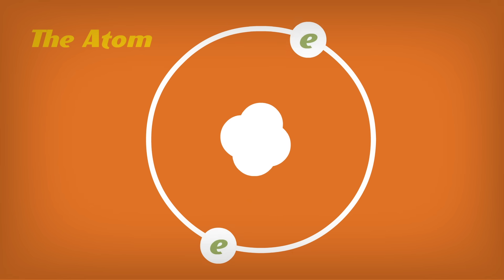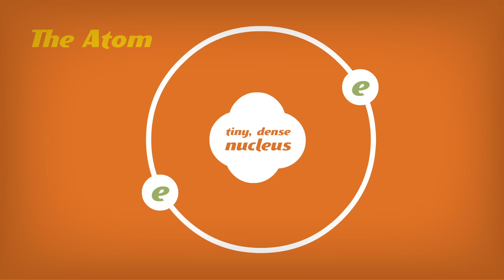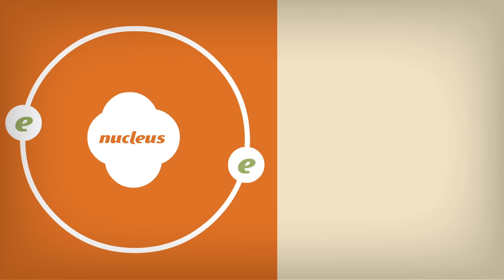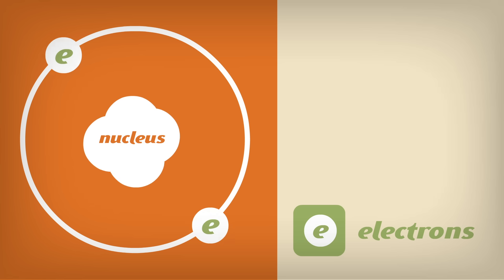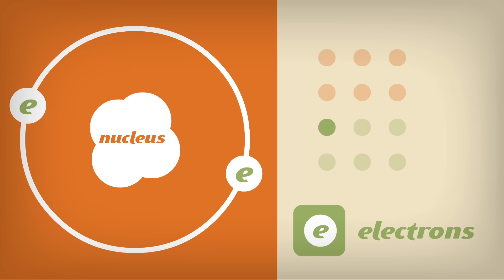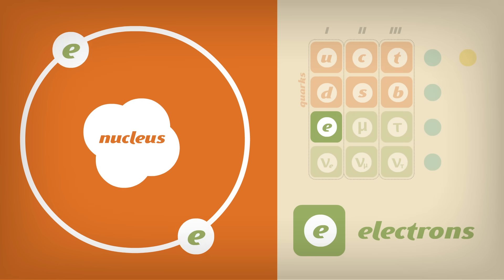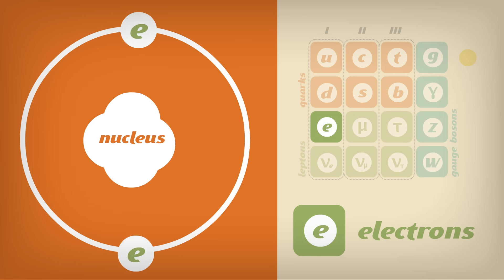Experiments found that each atom has a tiny, dense nucleus, surrounded by a cloud of even tinier electrons. The electron is, as far as we know, one of the fundamental, indivisible building blocks of the universe. It was the first Standard Model particle ever discovered.